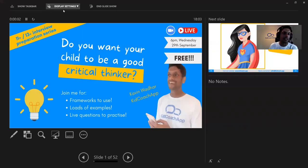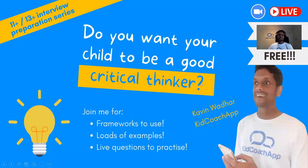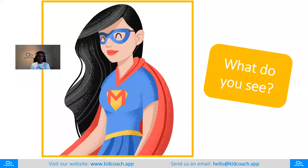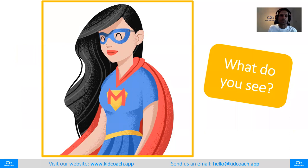So this is the session we are going through today. Hopefully you're in the right event — if this is not what you expected, please drop off, but if it is, I hope you're excited. Do you want your child to be a good critical thinker? Here's my first question for you: what do you see? I want to introduce you to somebody over here, and I'm really curious. Who is this person? What do you see? What does she represent? Can you relate to her at all?